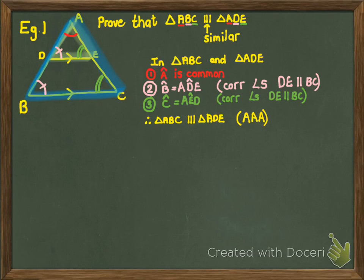Every similarity proof looks like this: an introduction, three lines of reasoning, and then a conclusion.